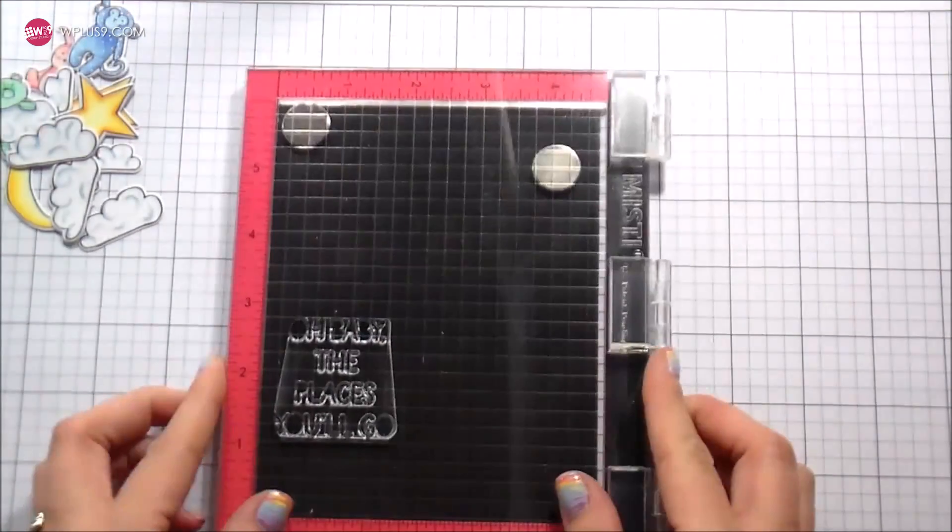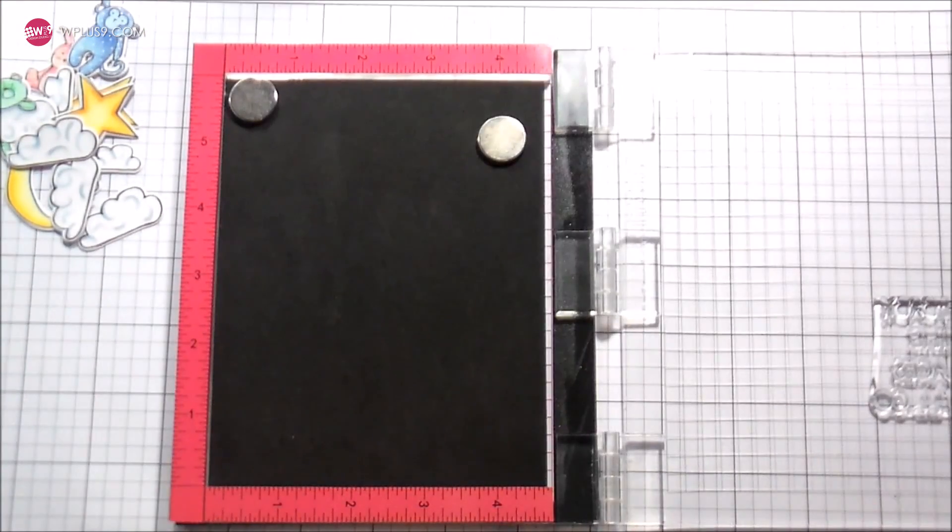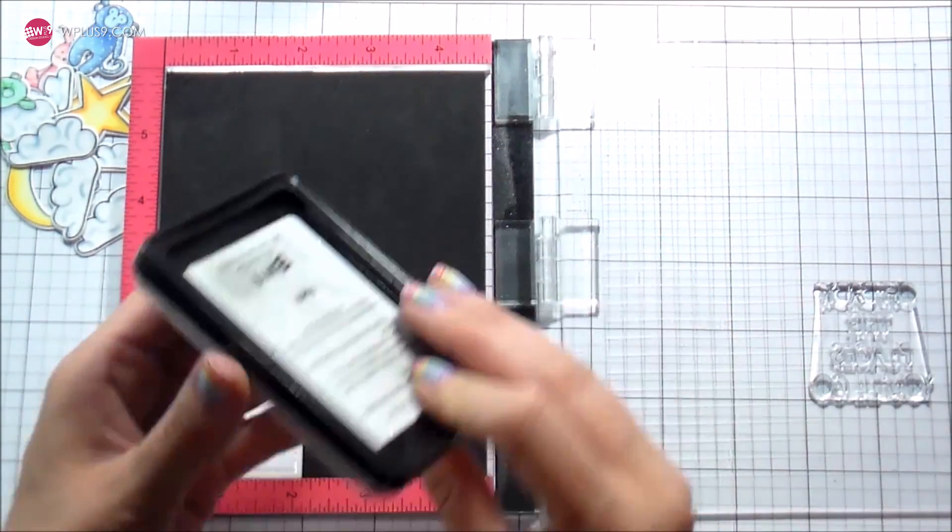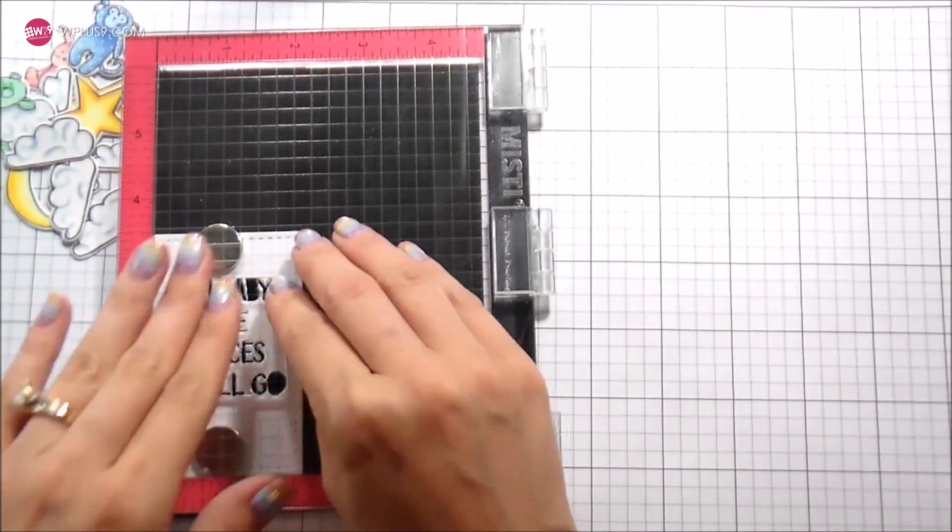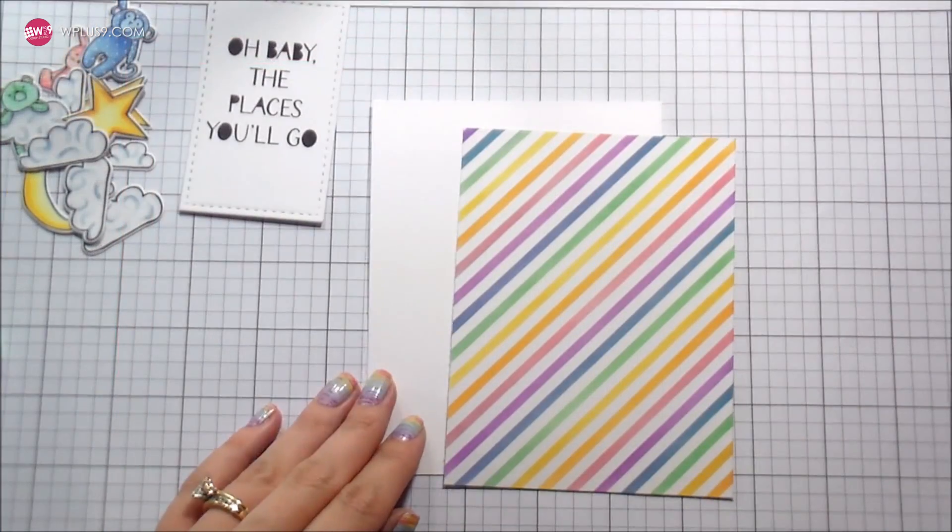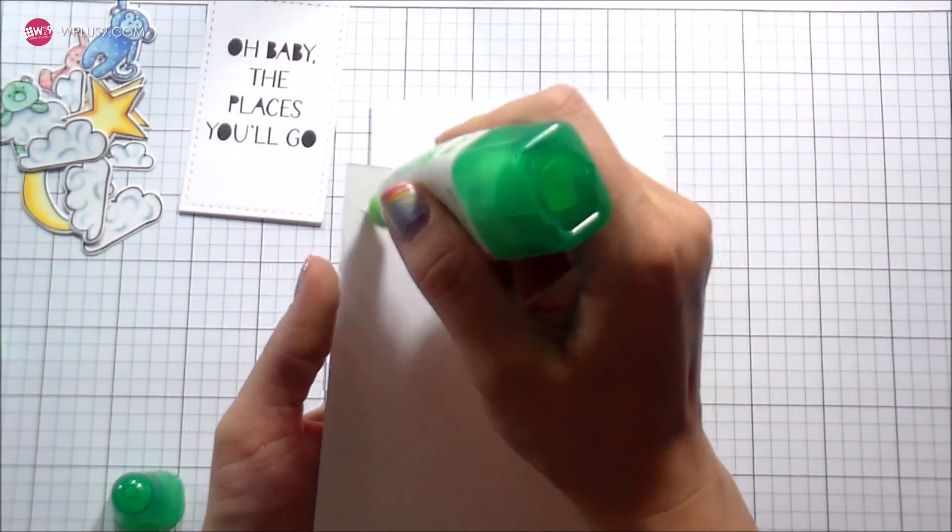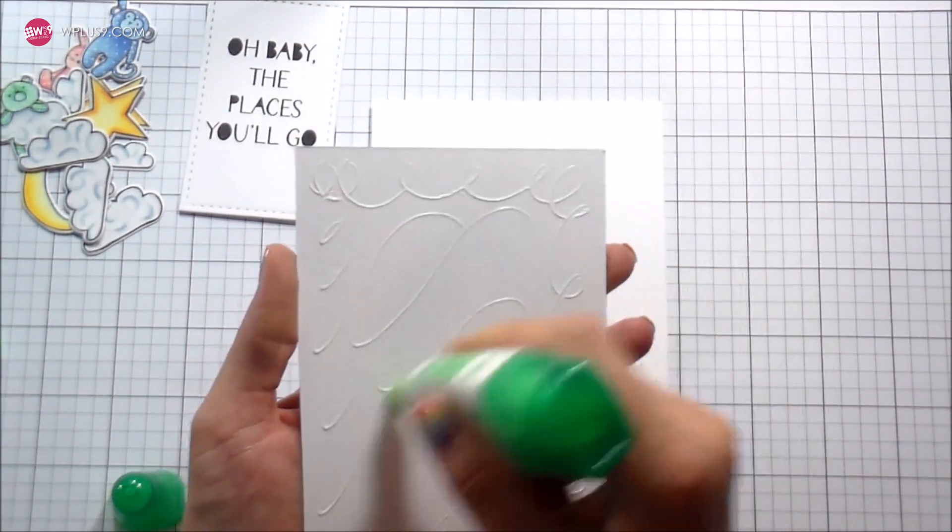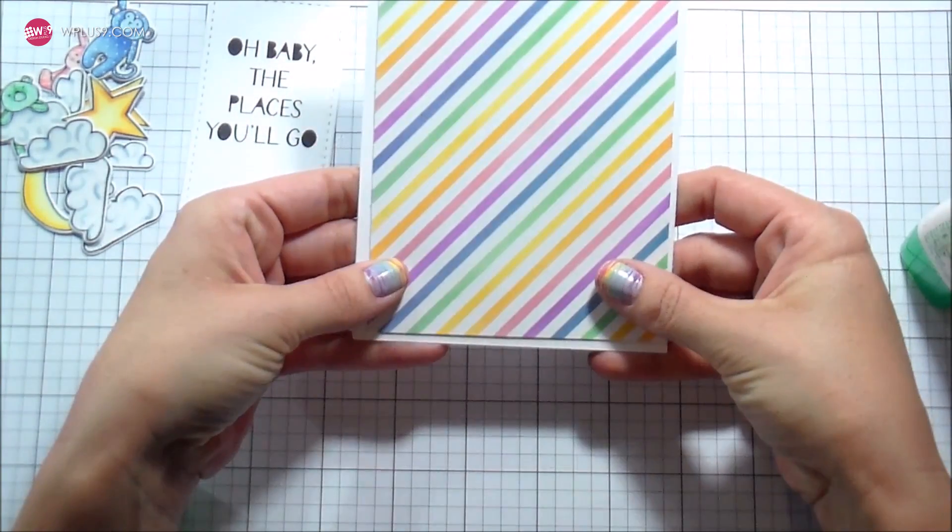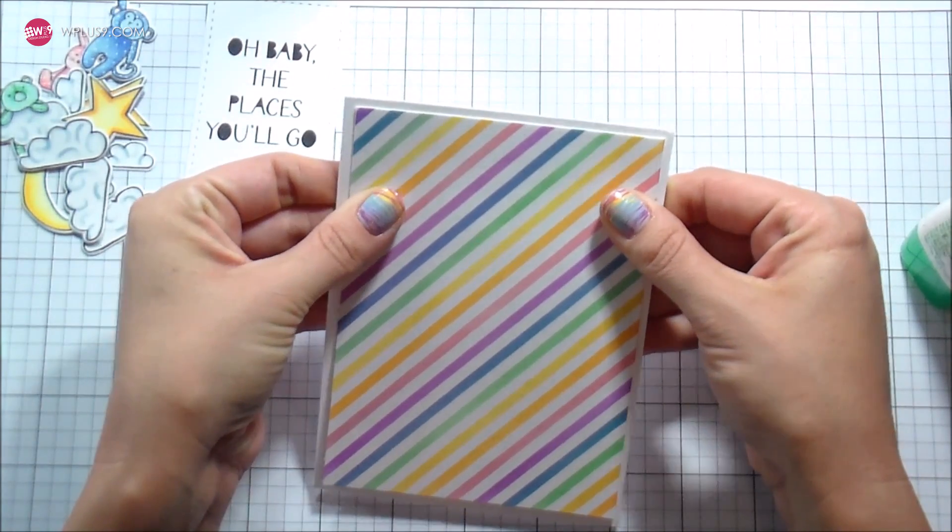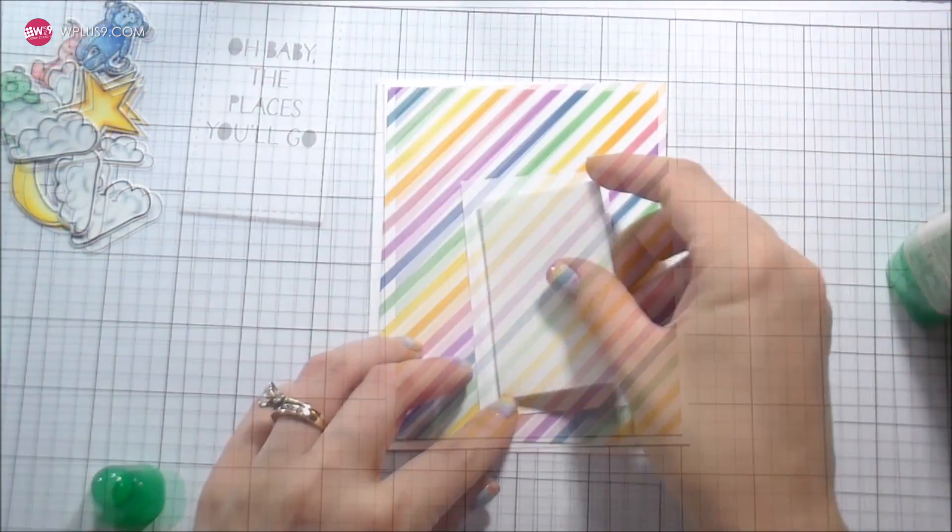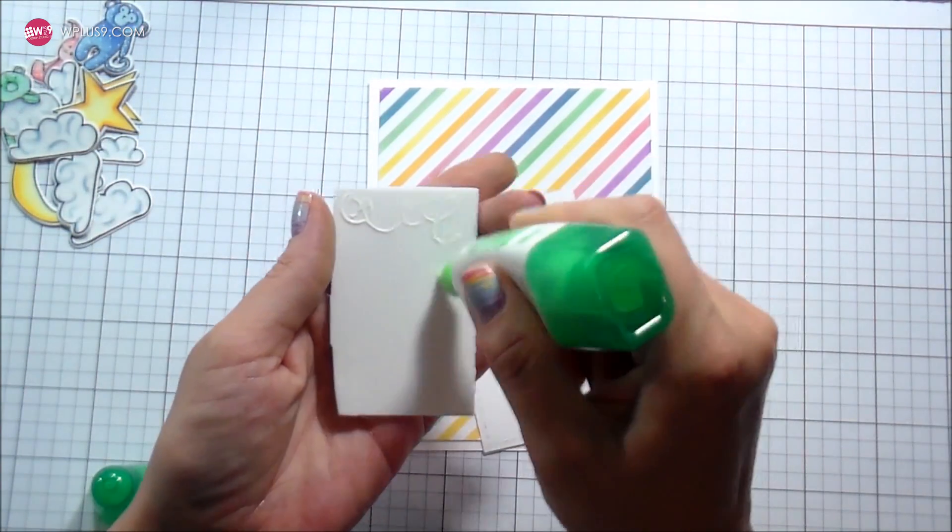You can see those other clouds in the background, I colored them the same way that I did the one the bear is using. I ran all those through my big shot as well as the gift cards layers die. Now I have my sentiment in my mini MISTI and I'm using the W Plus Nine pure black ink to go ahead and stamp down my sentiment. I'll be honest, I originally tried the silver lining because I thought, you know, they're pastels it'll be softer, and I just couldn't do it. I just love the black guys, I just do.